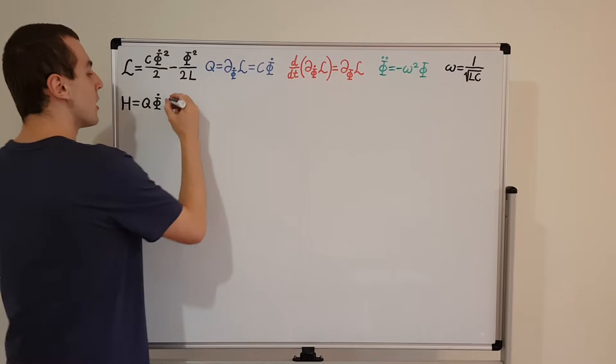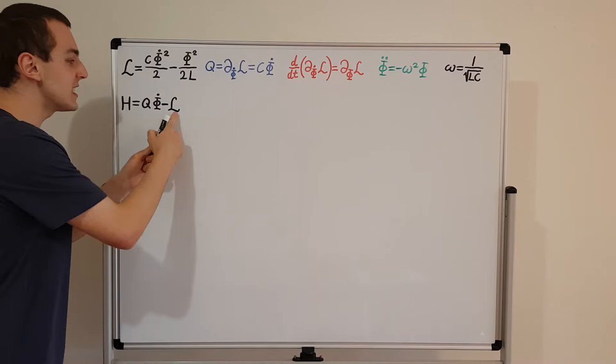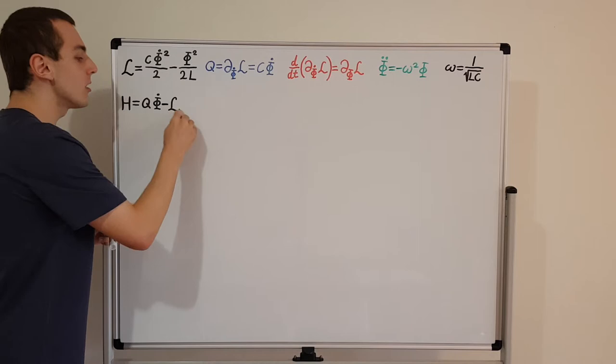We have the time derivative of a coordinate analogous to velocity, then we subtract the Lagrangian, fancy L. Make sure you distinguish this L from this L — this normal capital L is the inductance, and this fancy L is the Lagrangian.